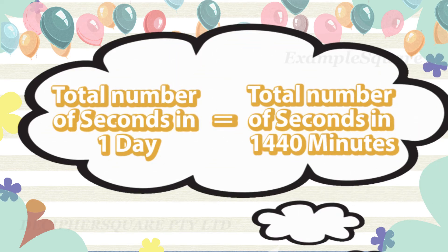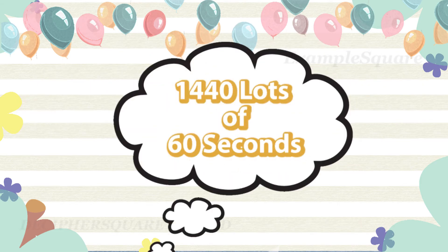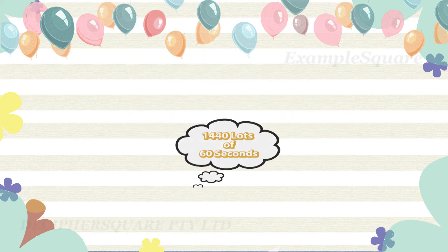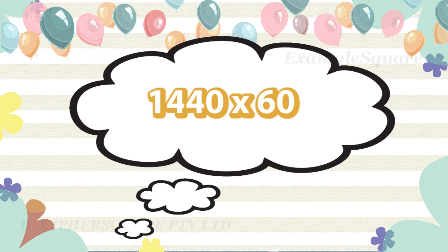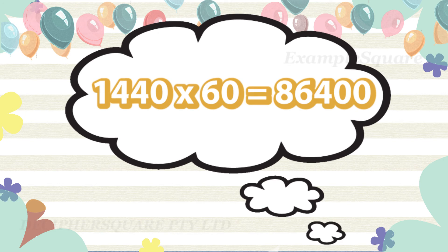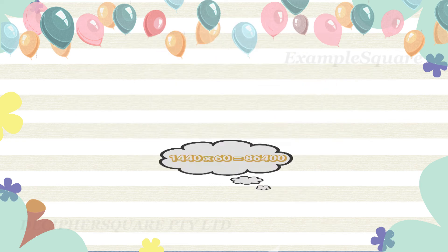The total number of seconds in a day equals the total number of seconds in 1440 minutes. Since every minute has 60 seconds, it is 1440 lots of 60 seconds — that is 1440 times 60, which equals 86,400 seconds.